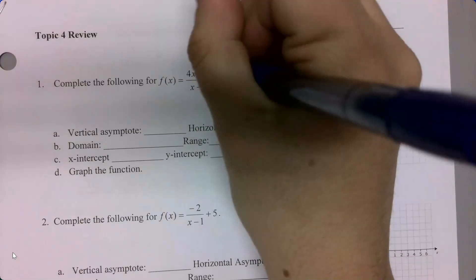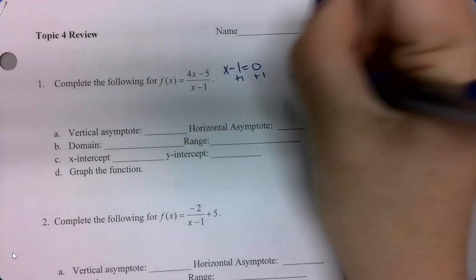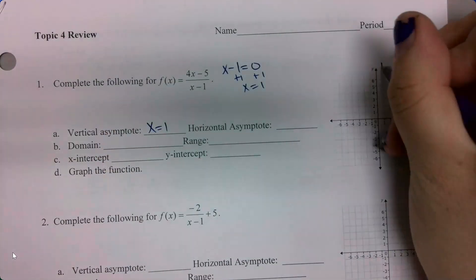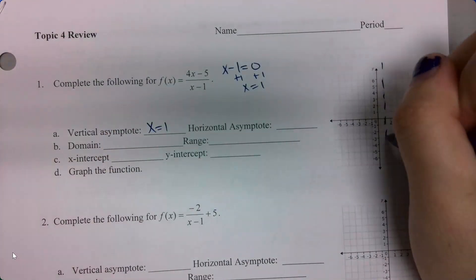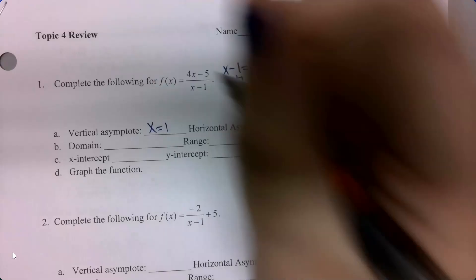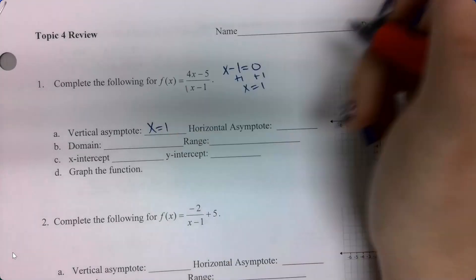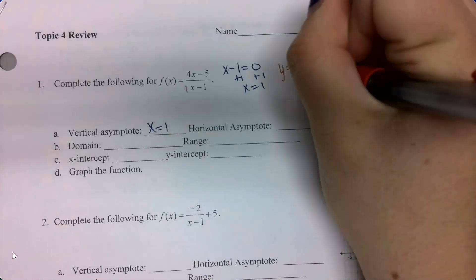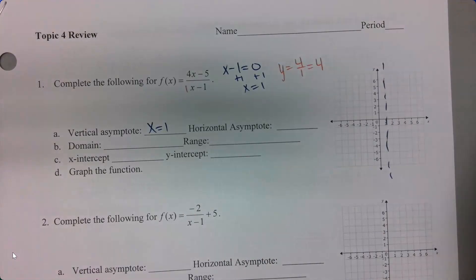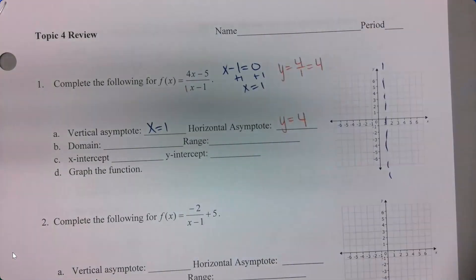To find my vertical asymptote, I'm going to take my denominator and set that equal to 0. So I just get x equals 1, and that goes as a dashed line on my graph. Then for my horizontal asymptote, I look at my coefficients of my leading terms. Because they're the same degree, it's going to be y equals 4 over 1, which is just 4, because I take the top coefficient divided by the bottom. So my horizontal asymptote is y equals 4.